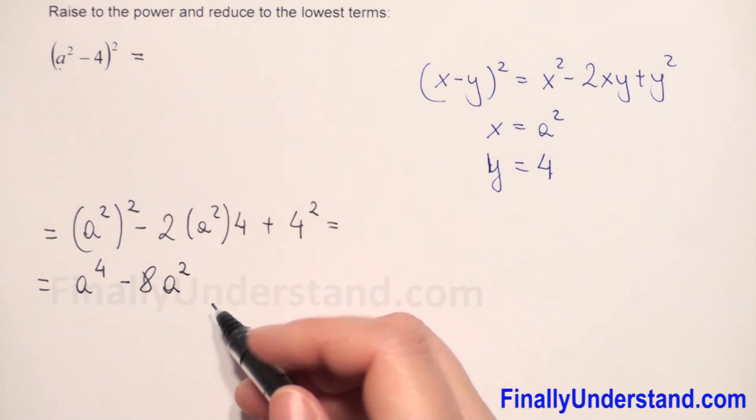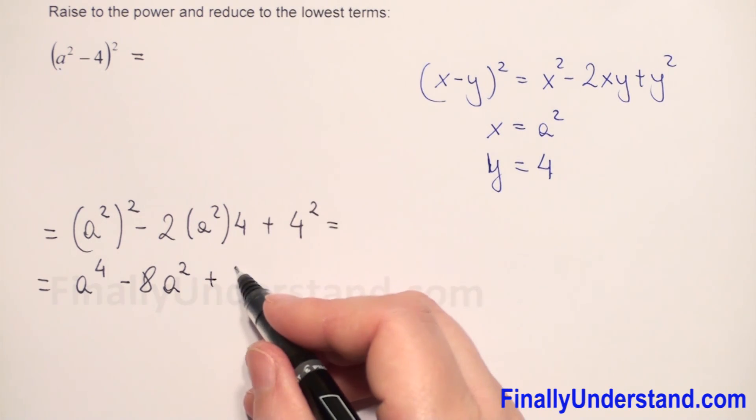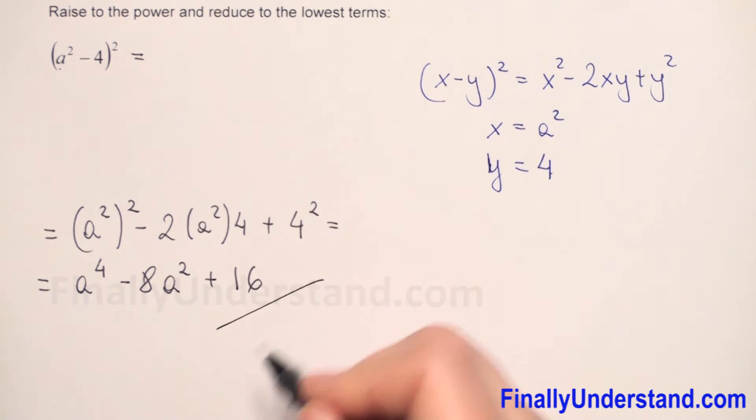And we have a squared. Plus, 4 to the second power is 16. This is my solution.